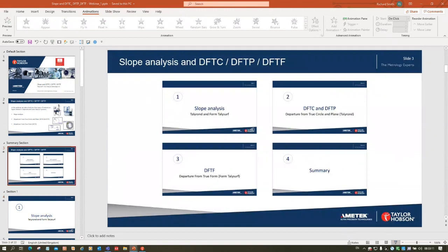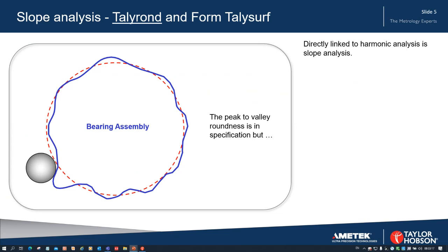We'll make a start with slope analysis. Looking at slope analysis, if we look at the diagram on the left we can see a profile — a roundness profile from a typical bearing assembly for example — and on it we can see one very prominent feature, and the simulation of a ball in a bearing race encountering that obstacle. In this case the peak to valley of the roundness is within its specification.